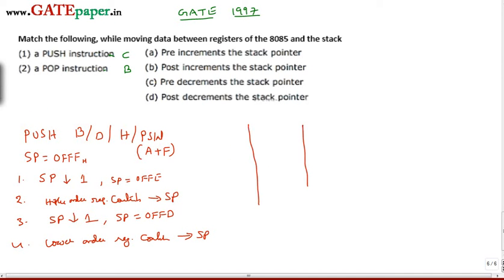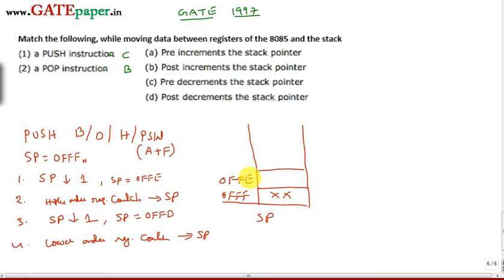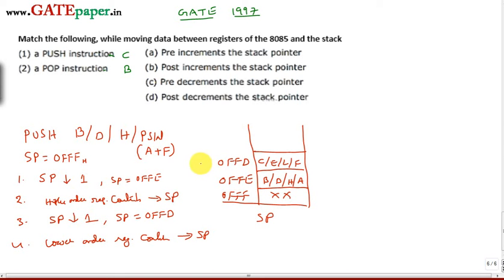Assume the stack pointer starts at memory location 0FFF. The data at that location is unknown since it is not used. When executing push, the stack pointer is first decremented to 0FFE, and the higher order register contents are copied — that is B for push B, D for push D, H for push H, or the accumulator for push PSW. Then the stack pointer is decremented again to 0FFD, and the lower order contents — C, E, L, or the flag register — are copied. The present stack pointer is now 0FFD.